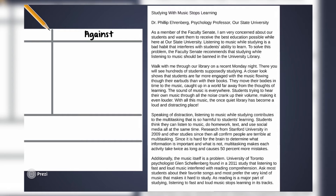'Listening to music while studying contributes to the multitasking that is so harmful to students' learning. Students think they can listen to music, do homework, text, and use social media all at the same time. Research from Stanford University in 2009 and other studies since then all confirm that people are terrible at multitasking. Since it is hard for the brain to determine what information is important, multitasking makes each activity take twice as long and causes 50 percent more mistakes. Additionally, University of Toronto psychologist Glenn Schellenberg found in a 2011 study that listening to fast and loud music interfered with reading comprehension. As reading is a major part of studying, listening to fast and loud music stops learning in its tracks.'